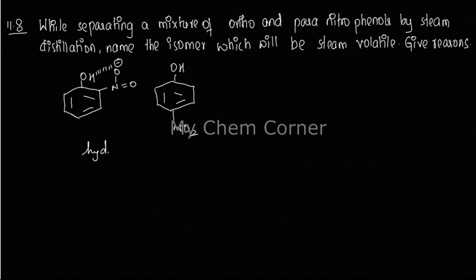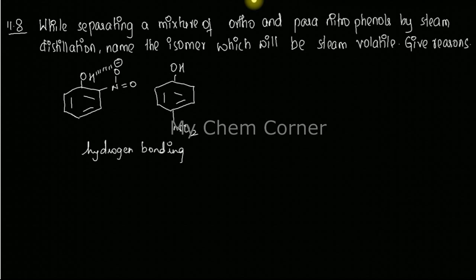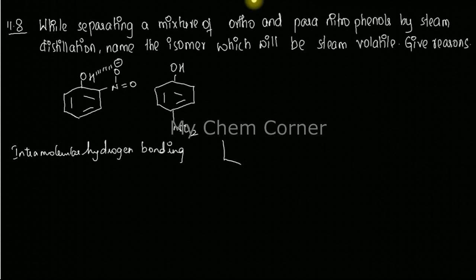There are two types of hydrogen bonding: intramolecular (within the same molecule) and intermolecular (between two different molecules). In orthonitrophenol, the bonding occurs within the same molecule, so it undergoes intramolecular hydrogen bonding. In paranitrophenol, the OH and NO2 groups are far apart from each other, so they cannot form hydrogen bonds within the same molecule.